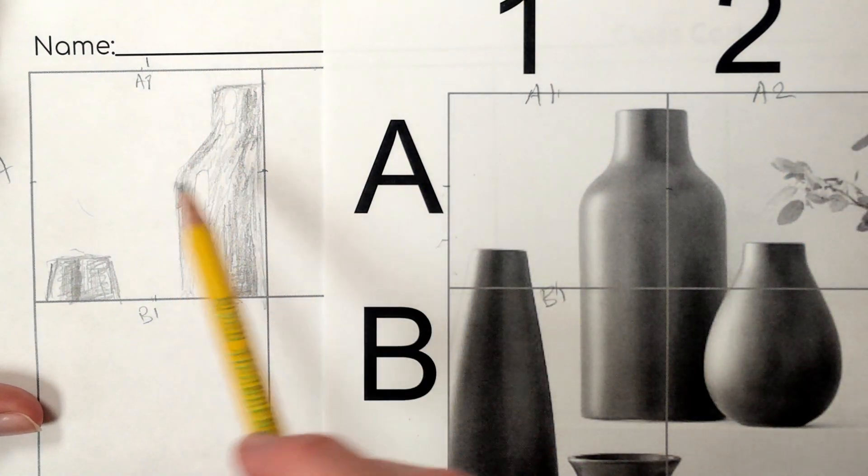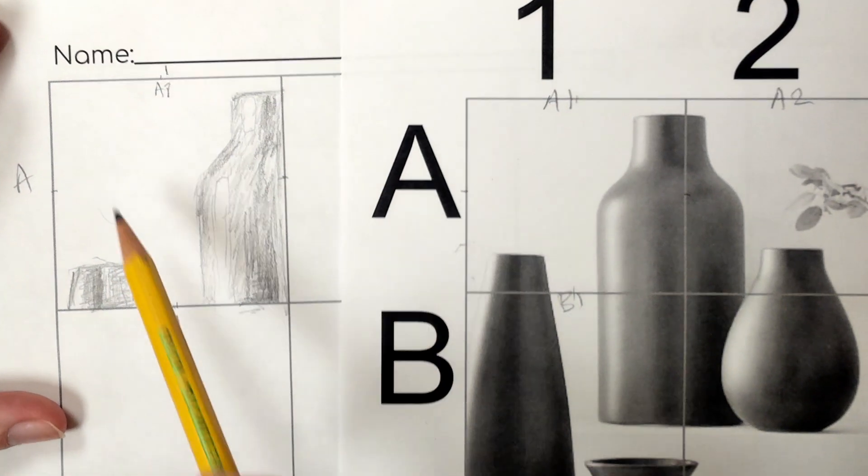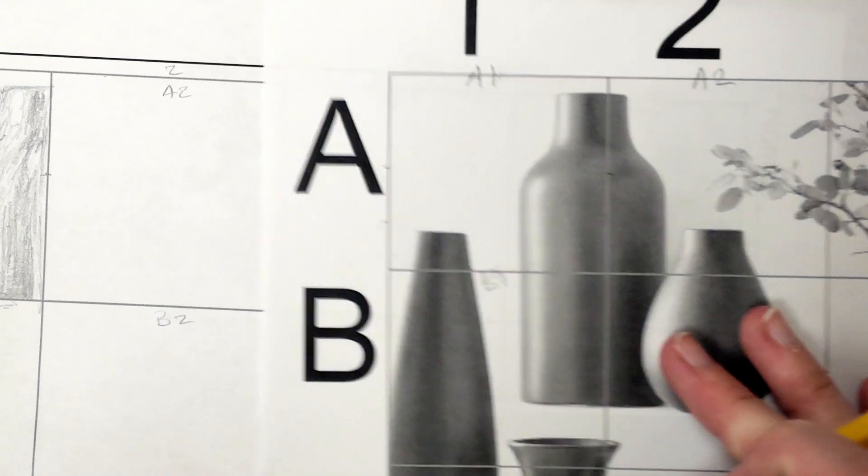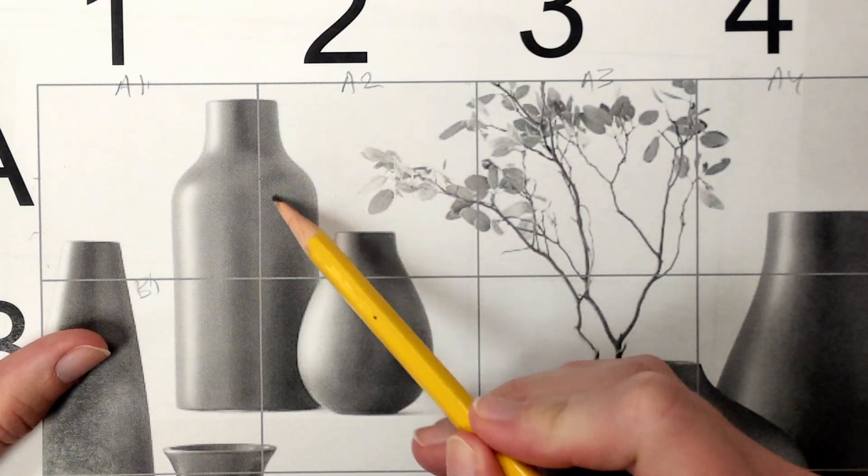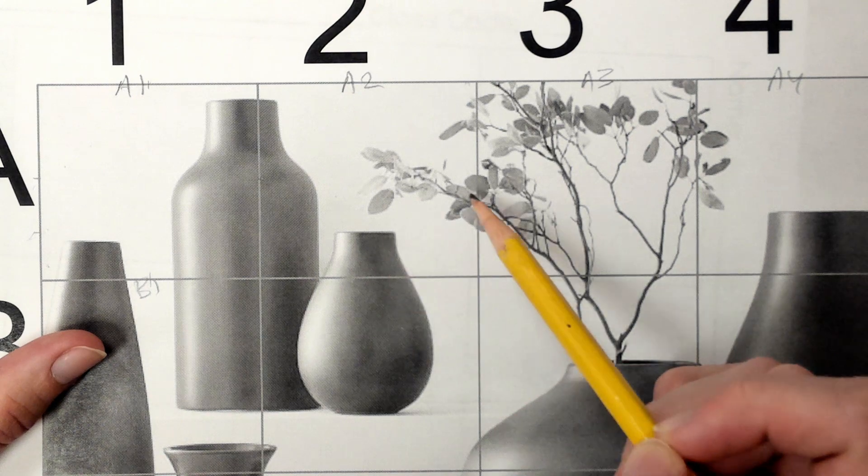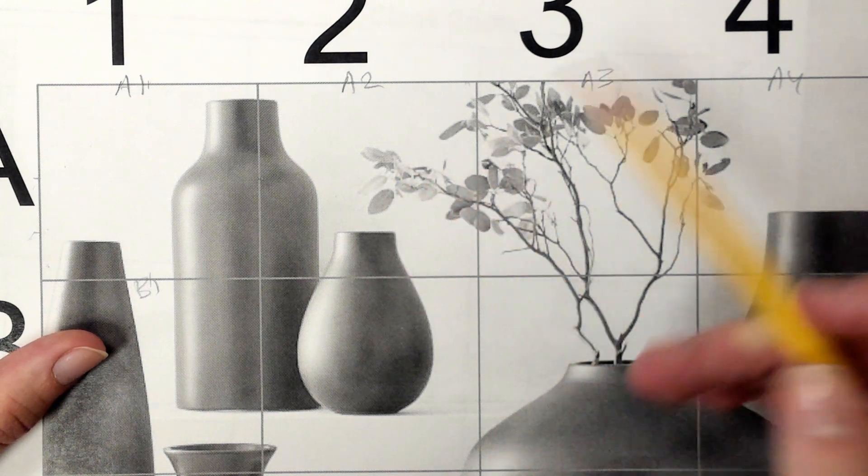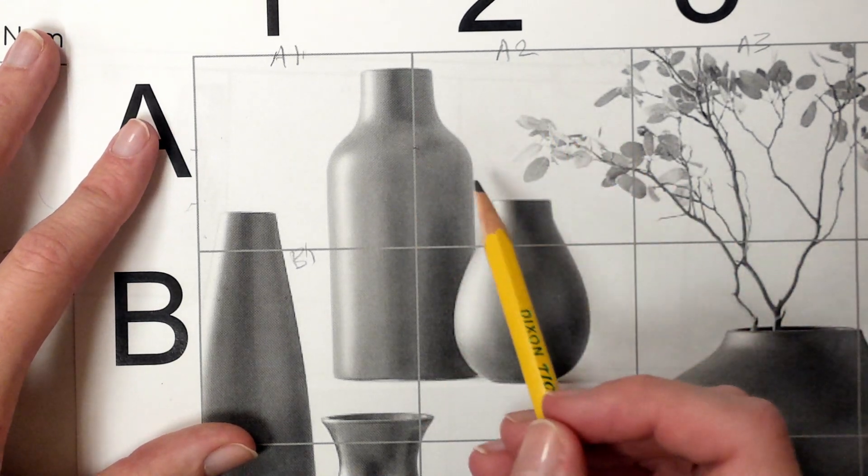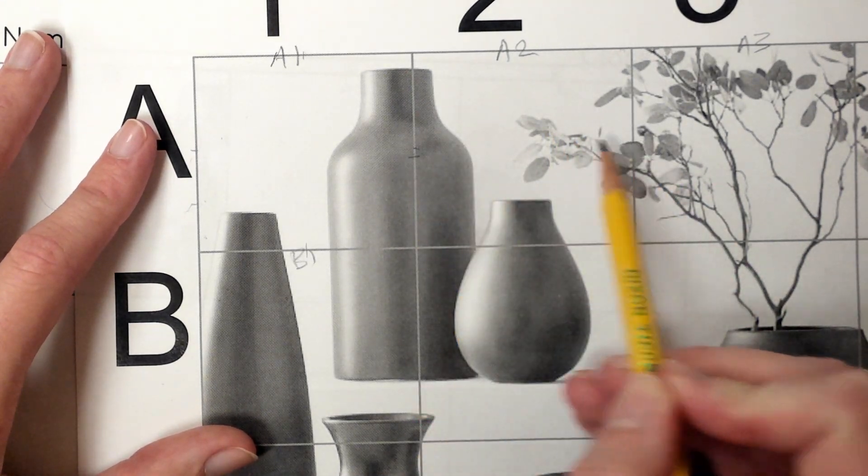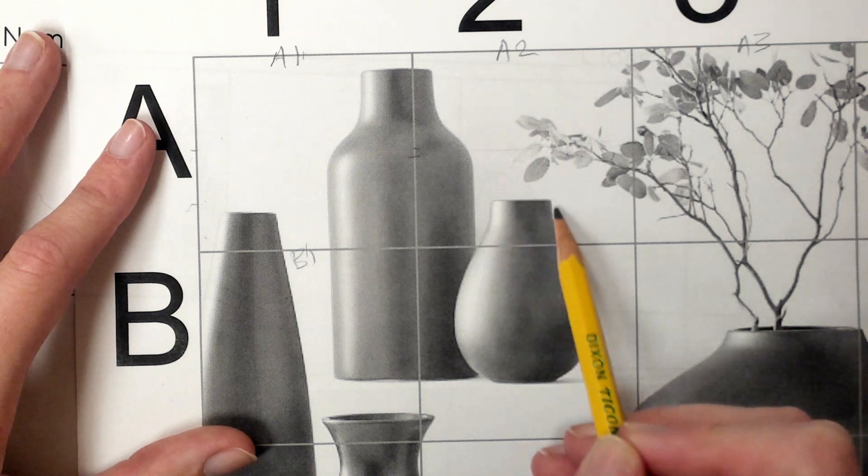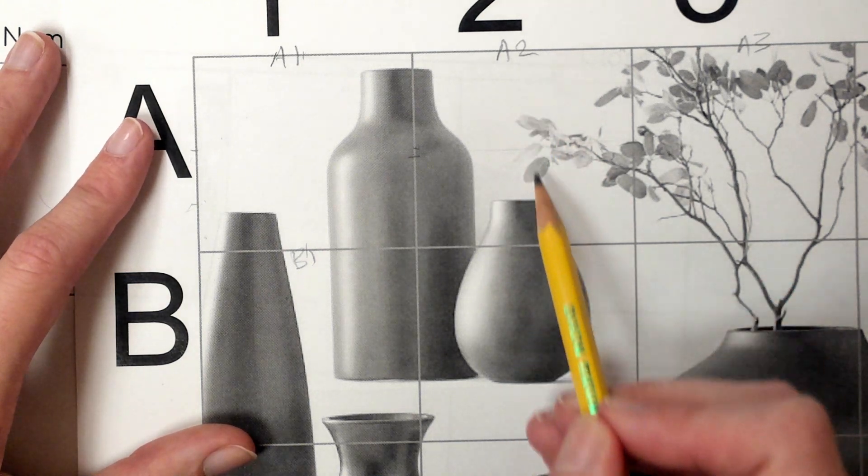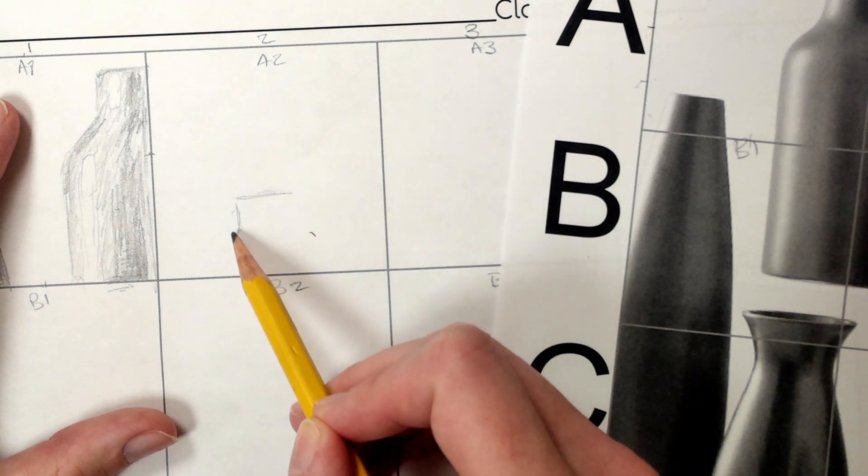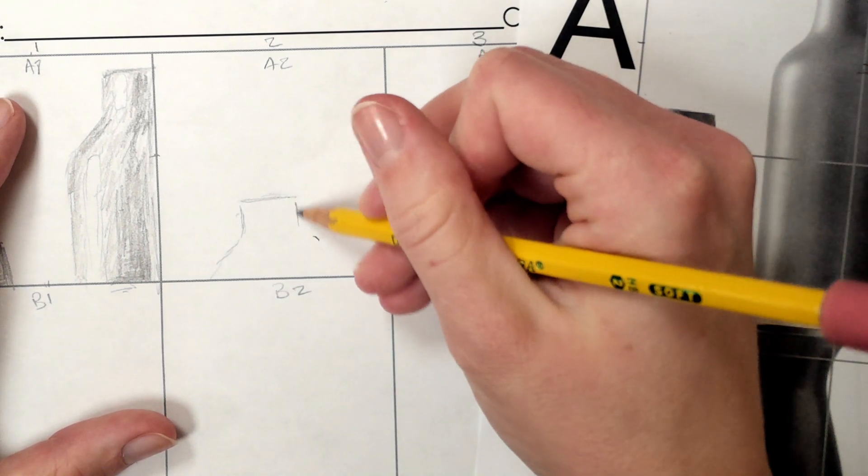Whenever you're finished with one square, then you'll move on to the next one. It could be vertical or horizontal that you do next. I think I'm going to look at A2. So in square A2, we can see the side of this vase, the top of this one, and some of the leaves from this plant. So I would start to look and see where in this square each of these things are. Again, if this is the halfway line, this one is well below the halfway line, and it's about in the middle. So well below the halfway line and about in the middle, I would start to sketch the top of this vase.